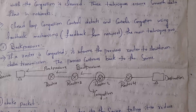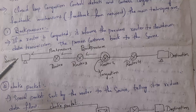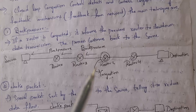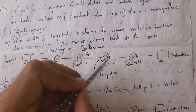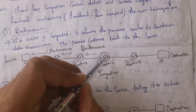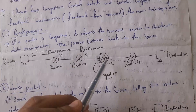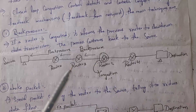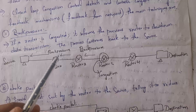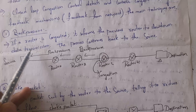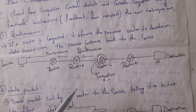The first feedback mechanism is back pressure. For example, the sender wants to transfer data to the receiver through multiple routers. In back pressure, whenever congestion occurs at a particular router, that router will inform the previous router to slow down the data transmission. For example, if congestion occurs at router 3, router 3 will inform the previous router, which will then inform the router before it, so the sender will send data very slowly. This process continues back to the source router.